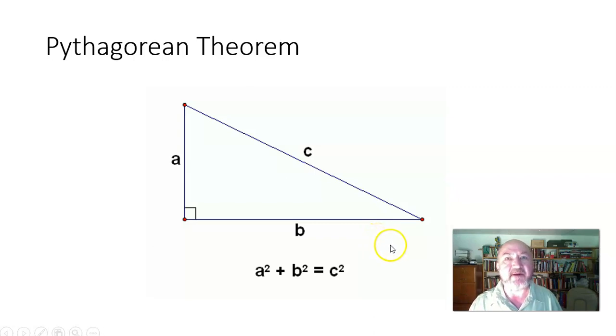Does this ring any bells? A squared plus B squared equals C squared. Everybody remembers that. I think the square of the hypotenuse is equal to the sum of the squares of the other two sides. I think I got that right after all these years. That's the Pythagorean theorem.